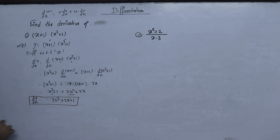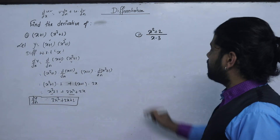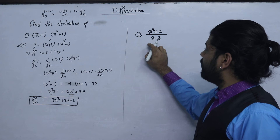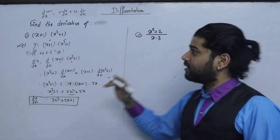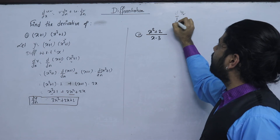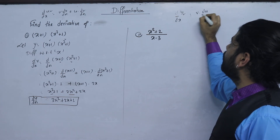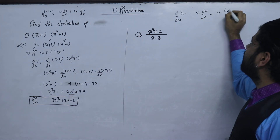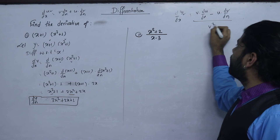We have a second question solved using the quotient rule. If x equals u over v, we have: v times the difference of u with respect to x, minus u times the difference of v with respect to x, upon v squared.